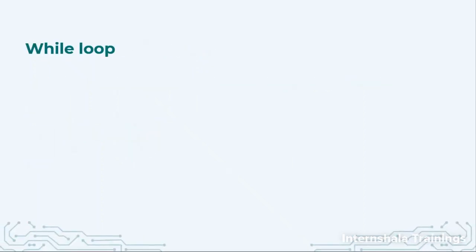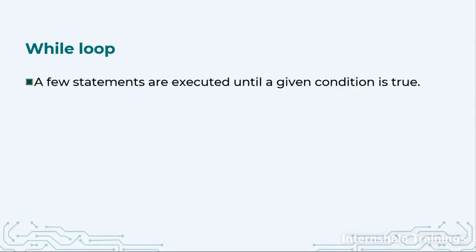The next loop that we have is while loop. This is a very interesting loop. Here a few set of statements will be executed only until a condition is true. So I say keep performing this if the sensor value is less than 35 degrees Celsius. If this happens, then stop. So that is what while loop is.